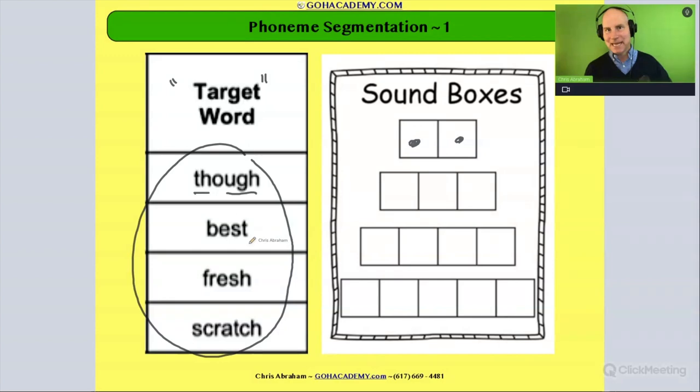How about best? How many sounds you hear in best? Let's see. I'm hearing a 'b', 'e', 's', 't'. That's got four sounds, four phonemes.